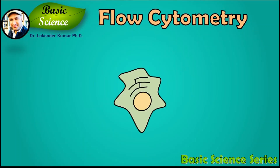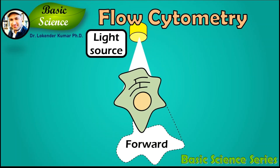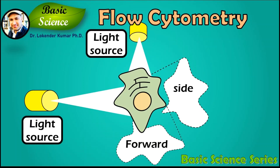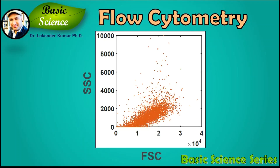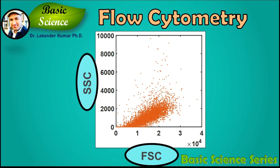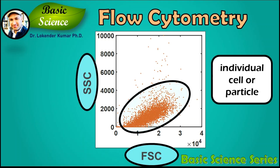The data is directly collected in the form of forward scattered light and side scattered light measurements. The typical plot acquired using a flow cytometer has forward scattered measurements on the x-axis and side scattered measurements on the y-axis, where each dot represents an individual cell or particle.